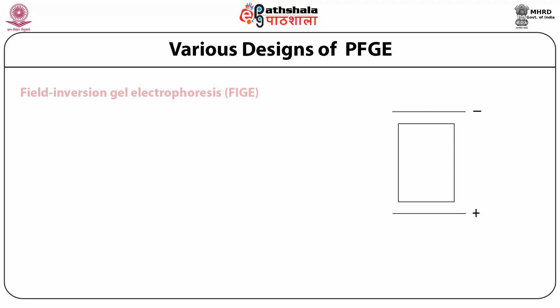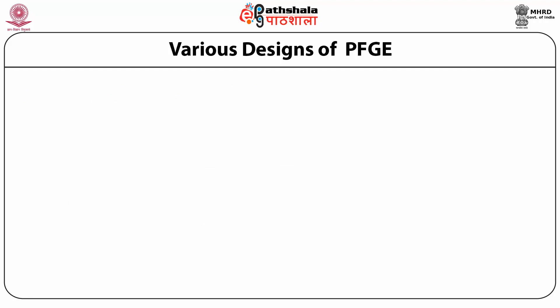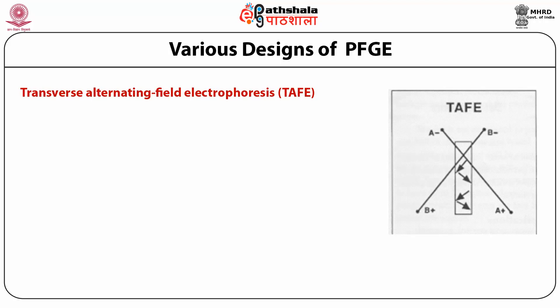Another variant is Field Inversion Gel Electrophoresis (FIGE), in which the orientation of the electric field is switched by 180 degrees. The electric field direction is inverted periodically, and the pulse duration between switching is uneven, so the net migration of DNA is in one direction. This kind of Pulse Field Gel Electrophoresis can be performed in a standard gel electrophoresis apparatus; however, an additional pulse controller is needed to switch and control the pulse timing of the electric field.